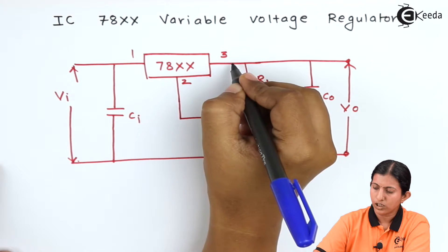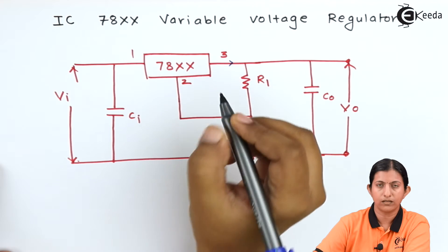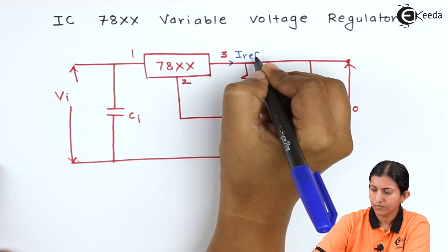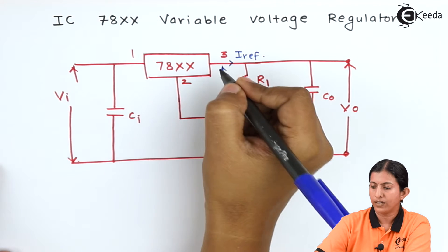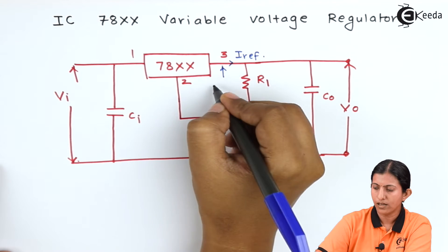Here the current flowing through pin number 3 is the reference current and the output voltage available between pin number 3 and 2 is V reference.